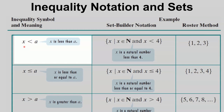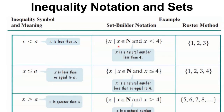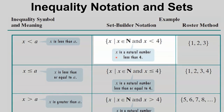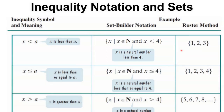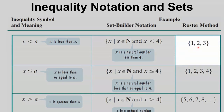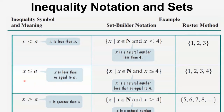When you have x less than a, this is read as 'x is less than a.' Using set builder notation, for instance, we have x such that x is a natural number and x is less than 4. And these are the natural numbers that are less than 4: 1, 2, and 3, using the roster method.